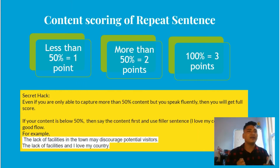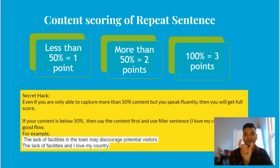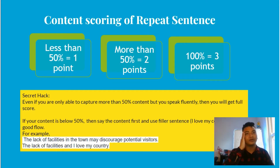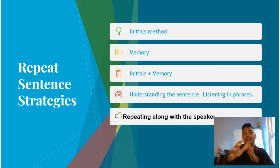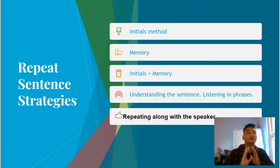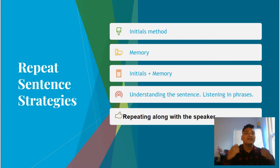Students might think it is impossible to remember 100% of a sentence. But the main strategy is familiarity. If you are familiar with a sentence, you'll be able to repeat it without any problem. The more familiar you are, the more confidently you can repeat it.